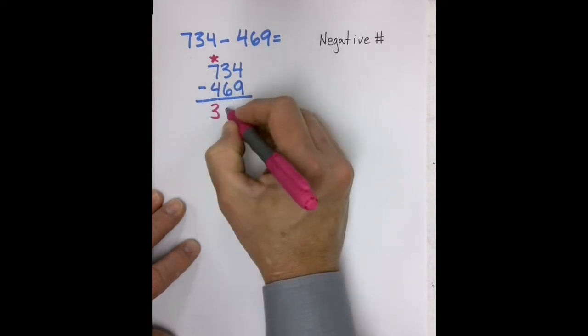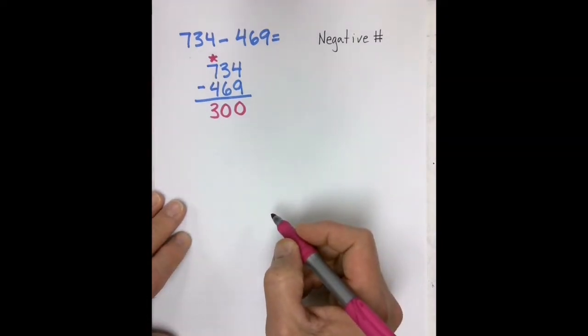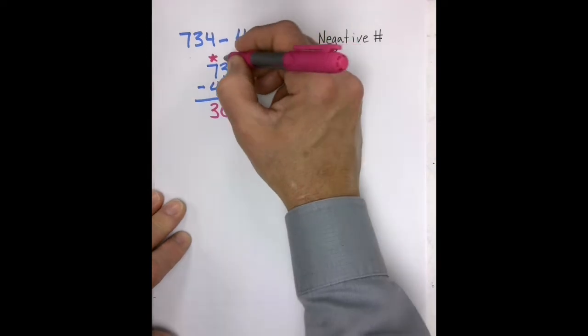And what I would do then is write down the total that I have. Now that I have 300 left in my number, I go to the next column, which would be the tens.